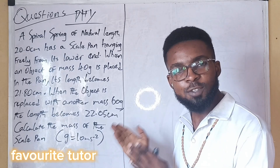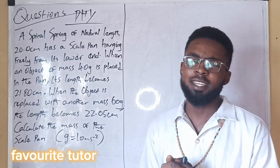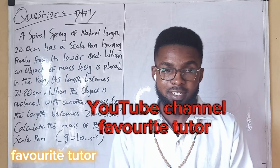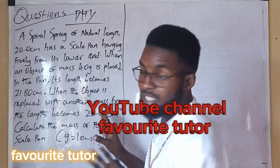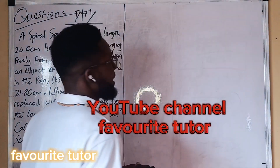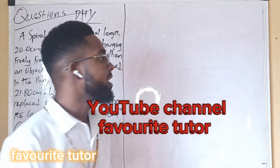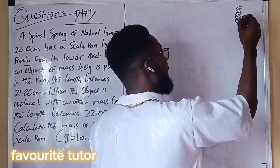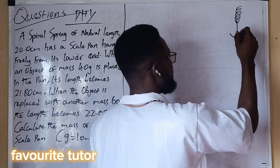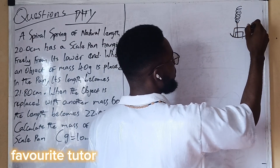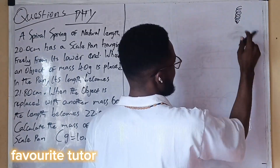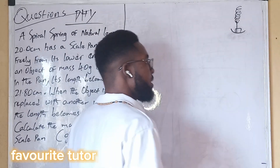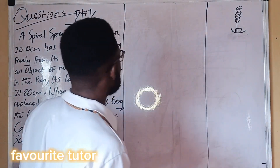I have solved this question before on my YouTube channel — please subscribe. I'm going to solve it again using a simple method. This is under elasticity, Hook's Law. The elastic material is the spring — that is the spiral spring. What was added to the spring is the mass of the scale pan and the load of 40 grams, then the load of 60 grams.